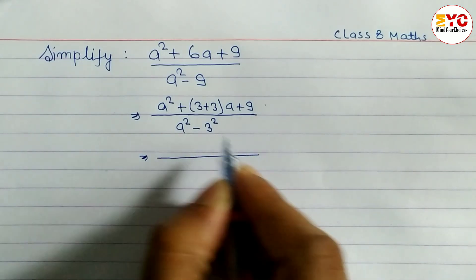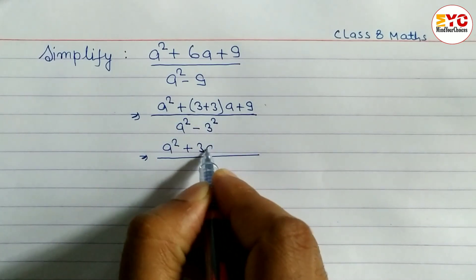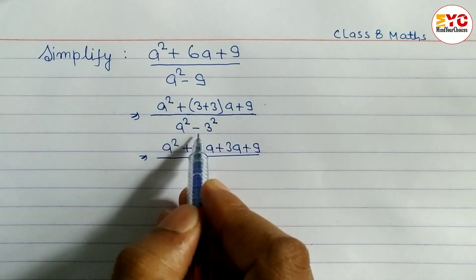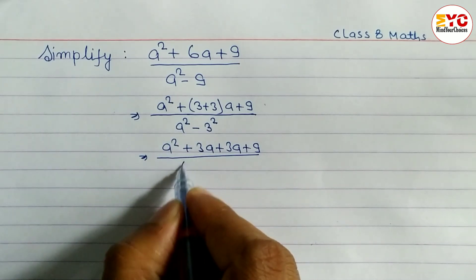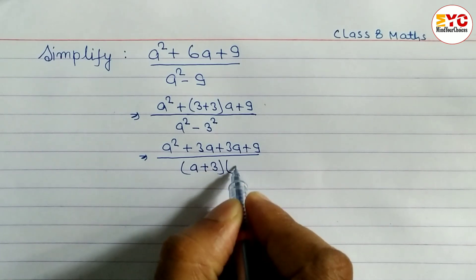Now open the bracket. When you open the bracket, what we get here: a square plus 3 into a, 3a plus 3a plus 9. And in the denominator you can see here in the form of a square minus b square, so we can use formula a plus b, a minus b. So we can write a plus 3, a minus 3.